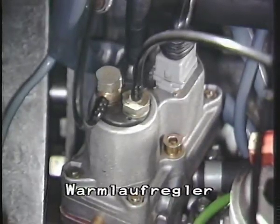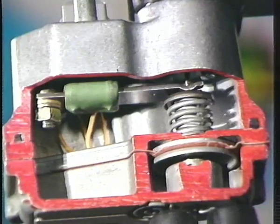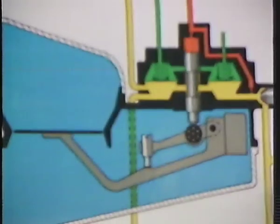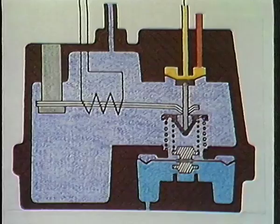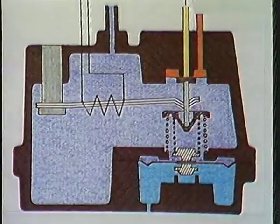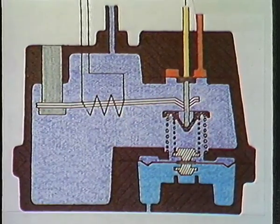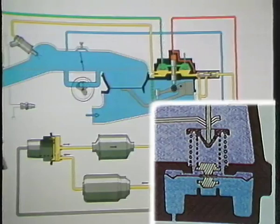Der Warmlaufregler: Seine Aufgabe besteht darin, eine Anpassung des Gemisches an Temperatur und Lastzustände des Motors zu bewirken. Bei kaltem Motor wird durch eine Bimetallfeder eine Verringerung des Steuerdrucks erreicht. Dadurch können bei gleicher Luftmenge Stauscheibe und Steuerkolben weiter nach oben gehen und durch die größere Öffnung am Schlitzträger mehr Kraftstoff zum Einspritzventil fließen. Bei warmem Motor wird die Funktion der Bimetallfeder aufgehoben, dadurch erhöht sich der Steuerdruck – höherer Steuerdruck bedeutet weniger Kraftstoff. Unabhängig von diesen Temperaturzuständen wird vom Unterdruck im Saugrohr über eine Membrane im Warmlaufregler der jeweilige Steuerdruck zusätzlich korrigiert.